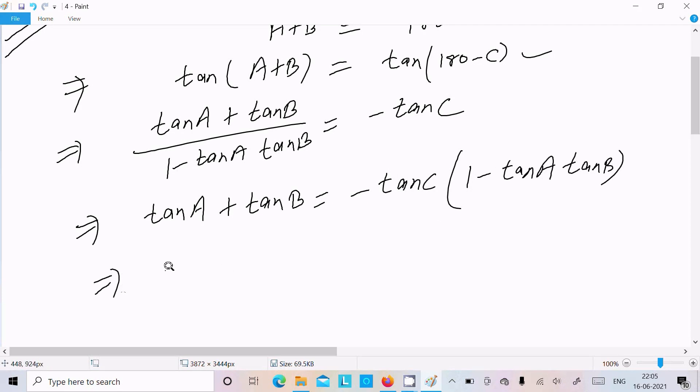There after, write tan A plus tan B. Next, minus tan C, this multiply with this all, so minus tan C into 1 that is minus tan C, and minus minus plus, here you get tan A into tan B into tan C.